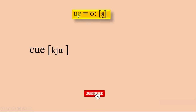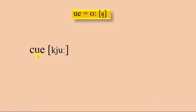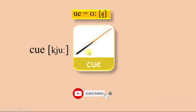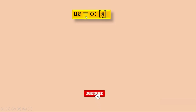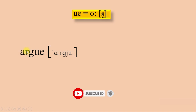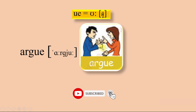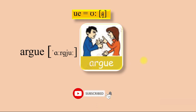U-E makes sound O as well. In the word Q-U-E-U-E: queue. And A-R-G-U-E: argue — they are very angry with each other. Okay, come on everyone.